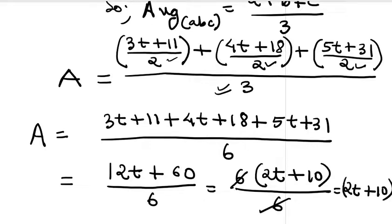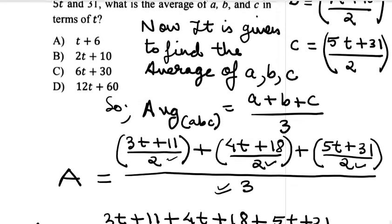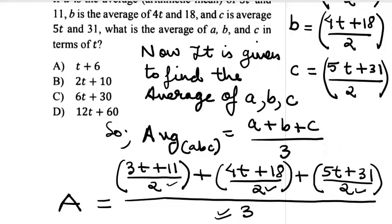So that's our average: 2t plus 10. Let's go back to the question and see if we have that option. Yes, we do. Part B is the correct answer: 2t plus 10.